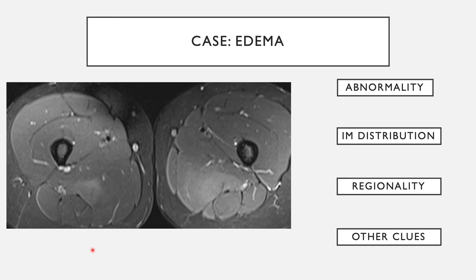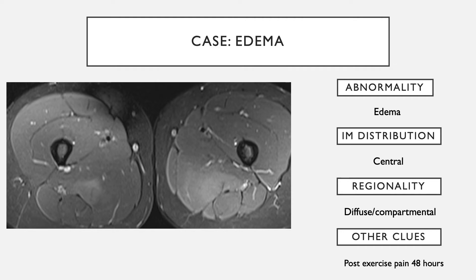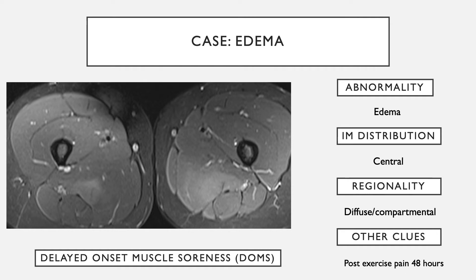In this case, the abnormality is muscle edema that is hazy and bilateral — somewhat central in distribution along the myotendinous junction, involving both posterior compartments. This was someone who had post-exercise pain and the images were obtained 48 hours after exercise. If there are symptoms and significant pain after exercise, we consider this a condition called delayed onset muscle soreness, or DOMS. This is an example of DOMS.